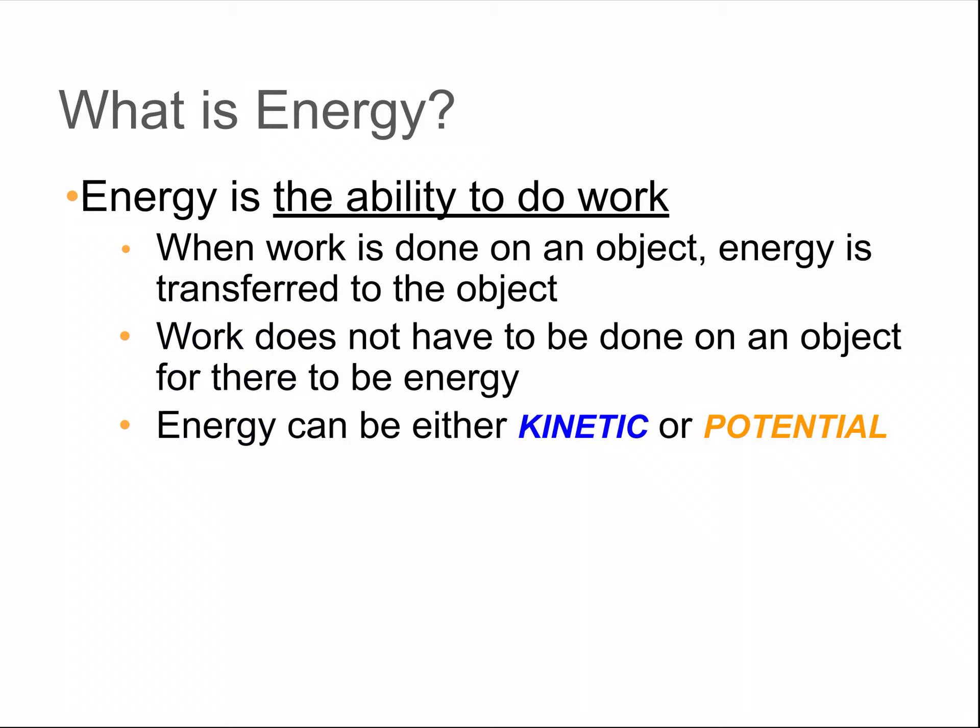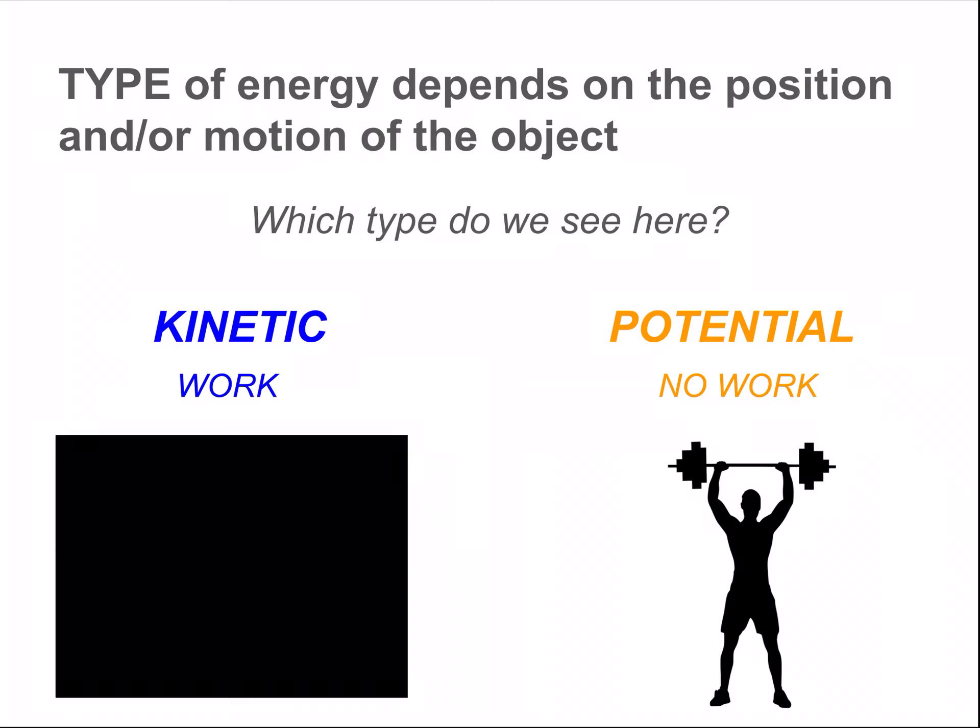And what energy is, is just the ability to do work. It does not mean that work has already been done. It just could, or have the potential of being done. And those are the two types of energy that we're going to look at: kinetic, which is motion, and potential, which is potentially energy. So which type we're seeing here? Where they're moving up and down, kinetic energy. And where they're lifting a barbell just over their head, not moving it, that is potential energy.